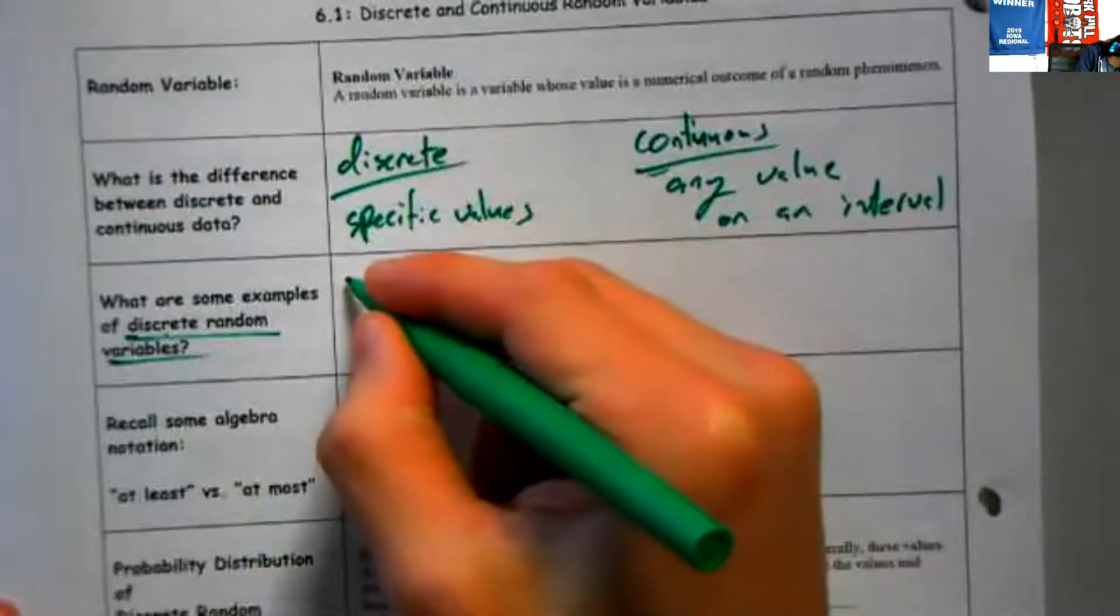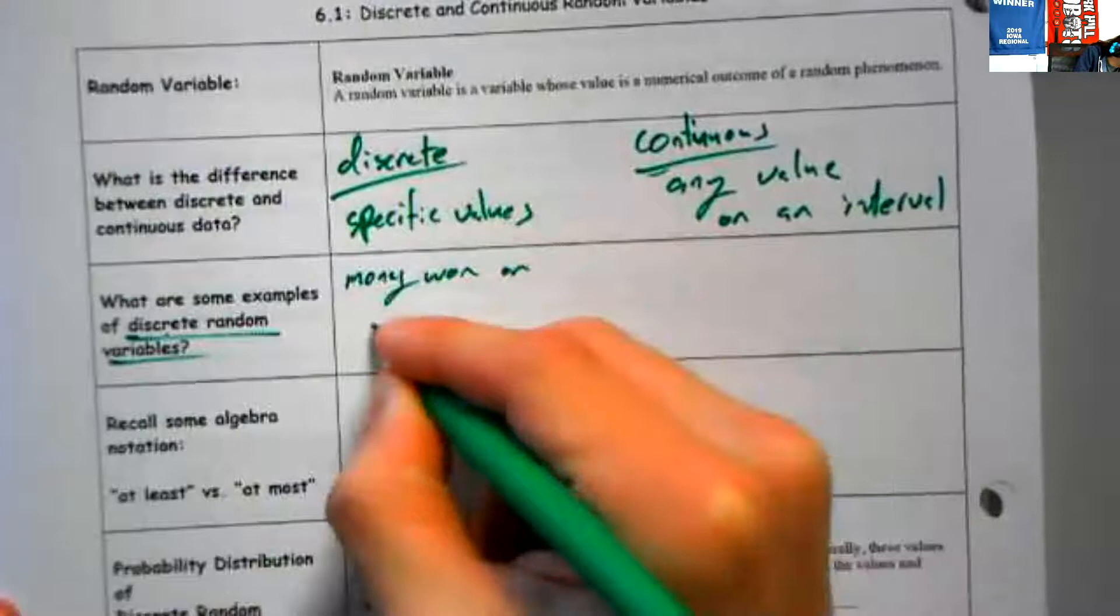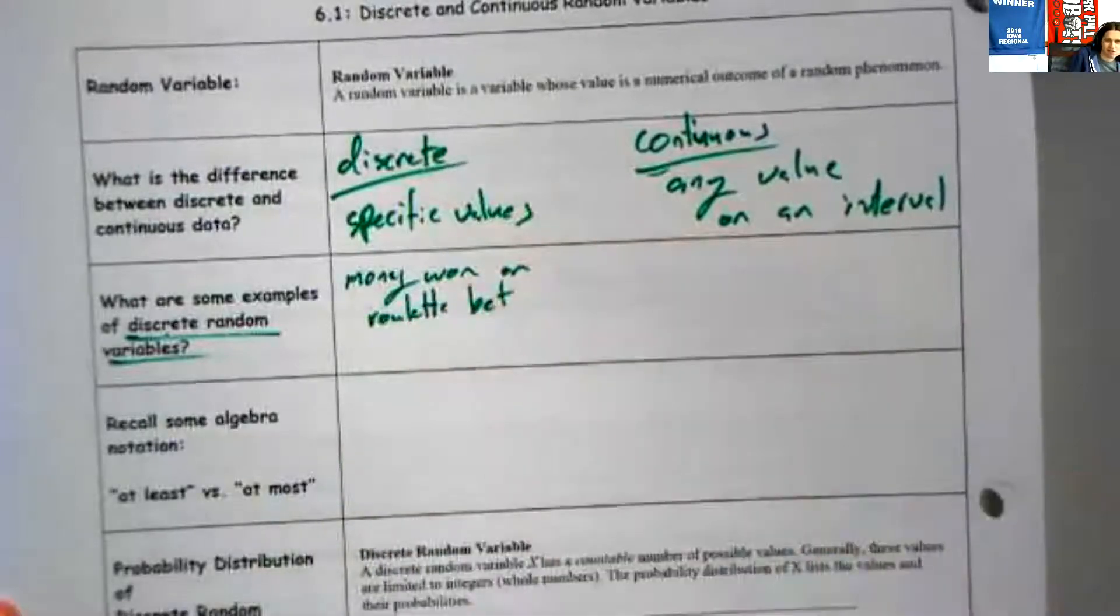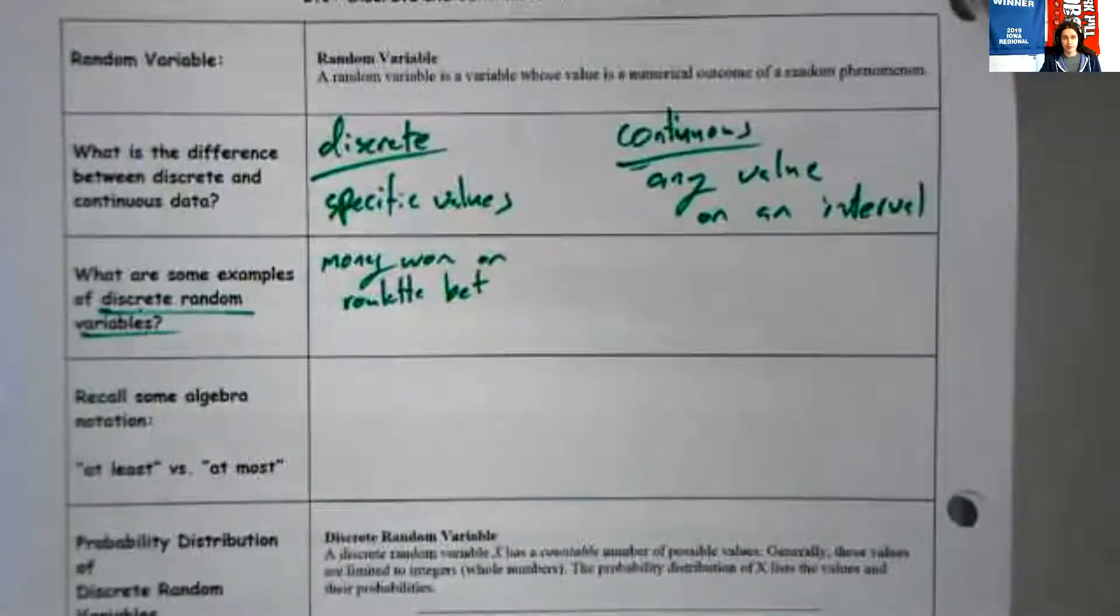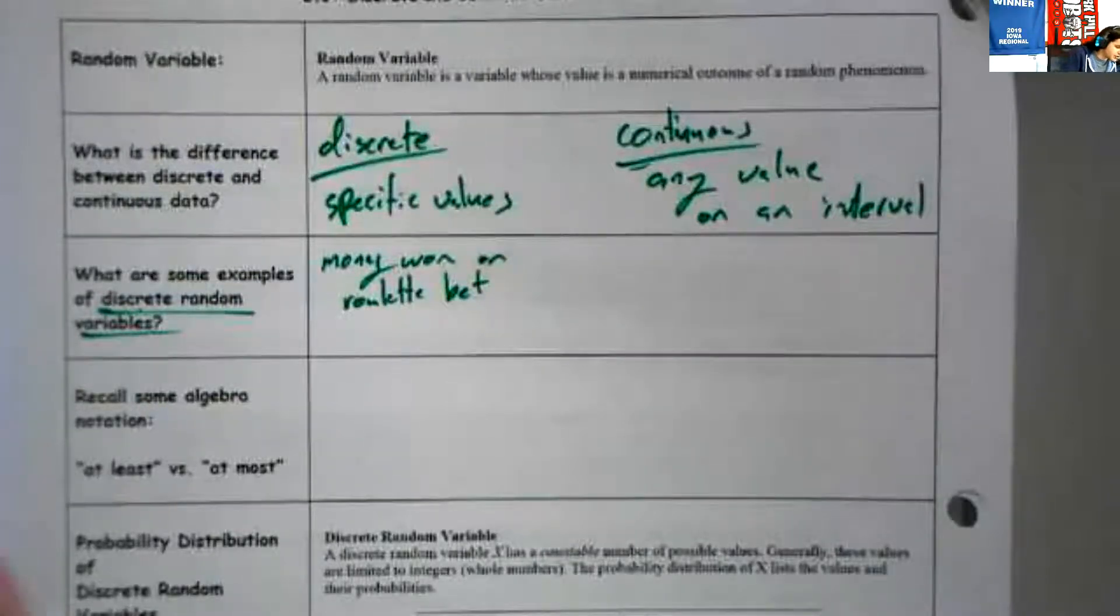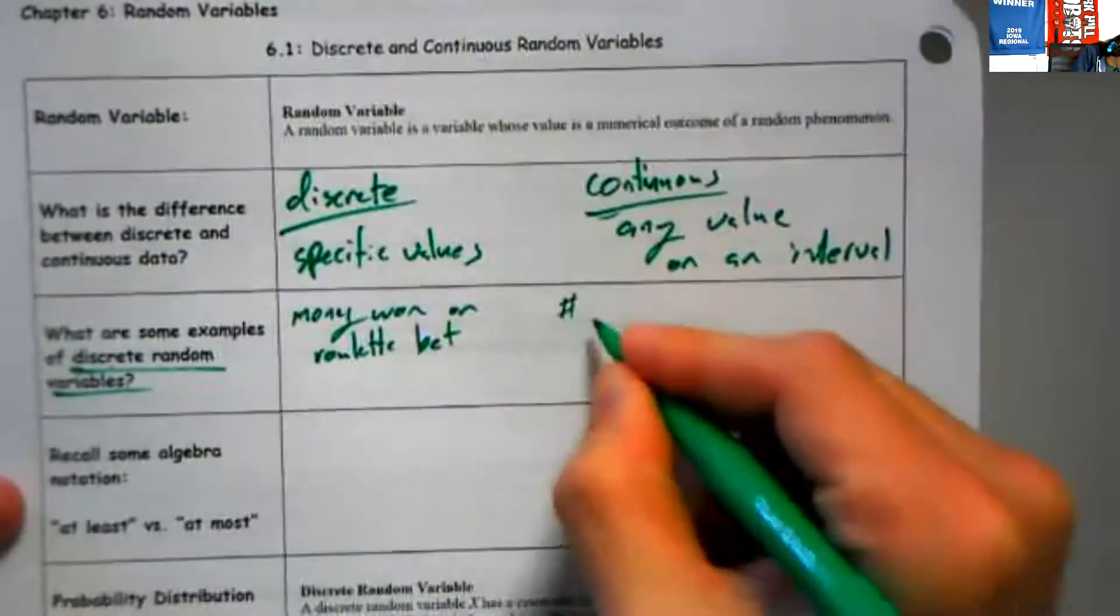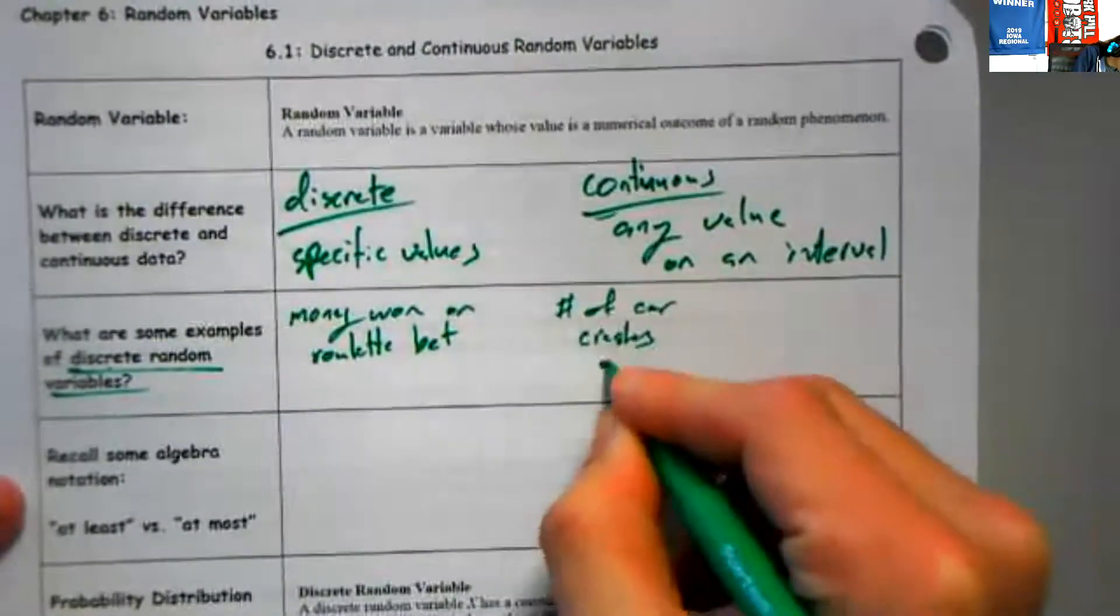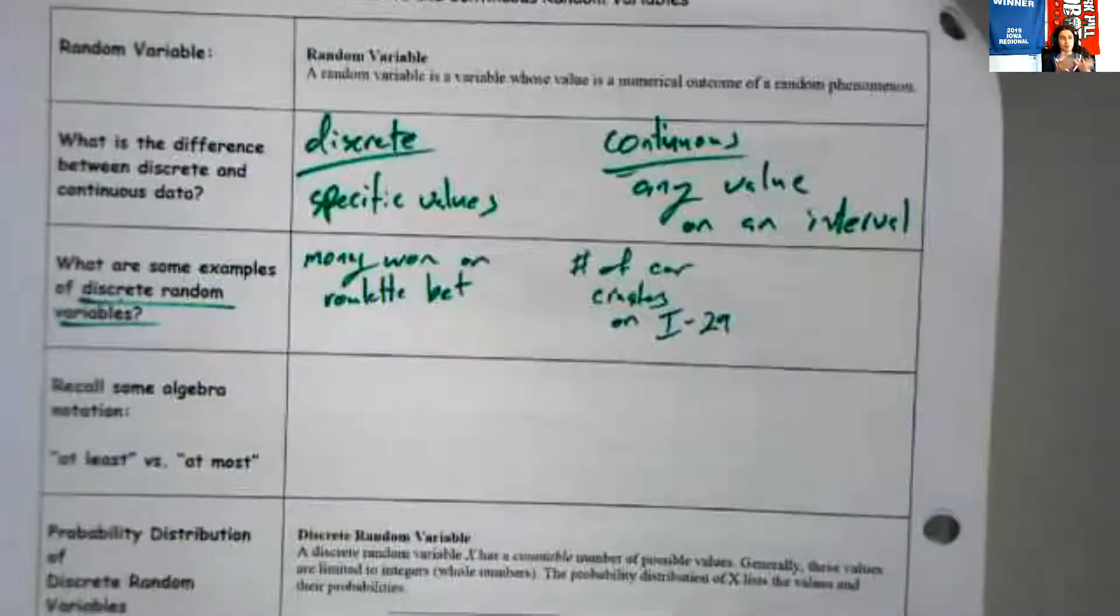What are some examples of discrete random variables? Well, the amount of money could be the money won on the roulette table or on a roulette bet, single roulette bet. Discrete random variables, like the number of car crashes on I-29. Things that happen in whole numbers or in specific values.